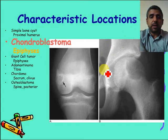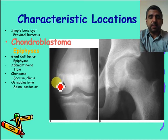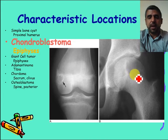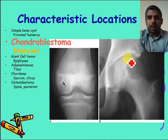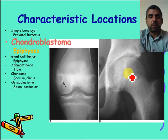Another epiphyseal lesion is chondroblastoma — you can see it is eccentric, does not extend above the articular surface, and is very well-defined. Here in the head of the femur, it is very well-defined with a sharp zone of transition and an epiphyseal location, which is characteristic for chondroblastoma.